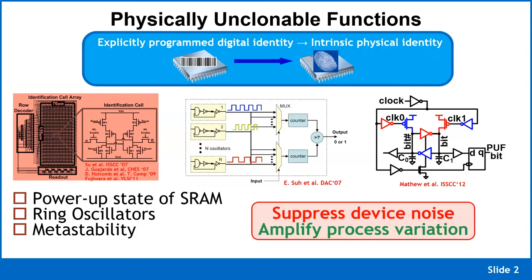A circuit like a physically unclonable function (PUF) takes advantage of intrinsic physical identity present in the devices themselves to generate this ID every time it's powered up. The physical phenomenon we tap into is random process variation.